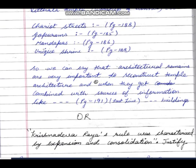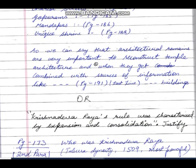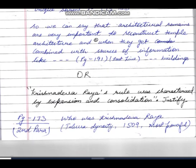Conclusion: 'We can say that architectural remains are very important to reconstruct temple architecture. When combined with other sources of information like inscriptions, evidence, and texts, we get to know what ideas and patterns builders wished to project, although they do not tell us what ordinary men and women wanted to see.'